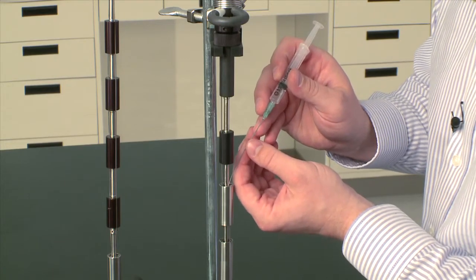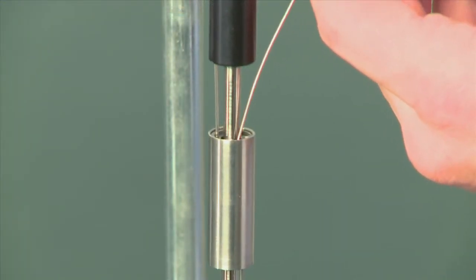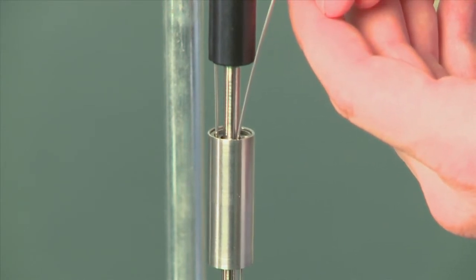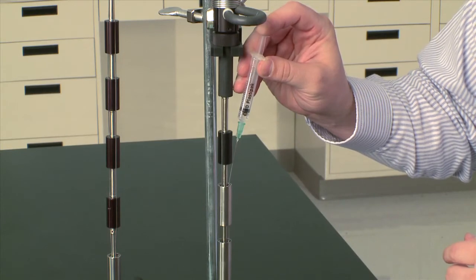You have to go through an O-ring, so you have to be quite careful. Once you find the bottom, put the needle all the way to the bottom and slowly inject the water to fill the humidity chamber.